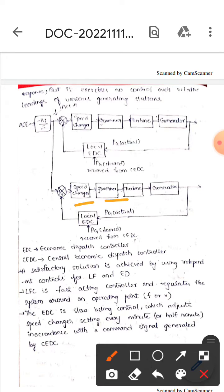Whereas this is speed changer, this is governor, this is turbine, this is generator, this is the local EDC, this is PGA actual, this is PGA design.